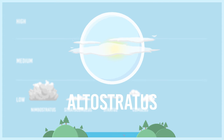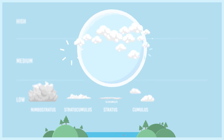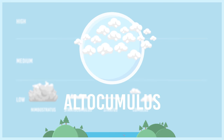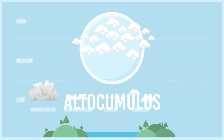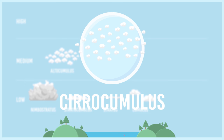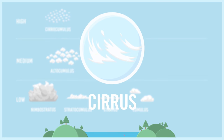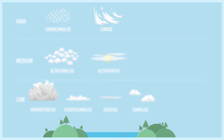Altostratus clouds are grey or blue-grey, mid-level clouds made up of ice and water. The sun can usually be seen dimly through these clouds. Altocumulus — mid-height, white to grey, small clumps of clouds. The colour differentiates them from cirrocumulus clouds, which are smaller versions of altocumulus, situated between 20,000 to 40,000 feet and are just plain white. Cirrus — a high altitude, wispy cloud looking like silky patches in the sky, made of ice crystals. These clouds generally appear in fair weather.